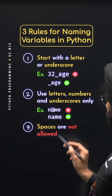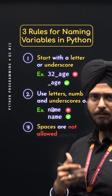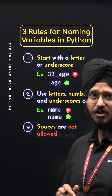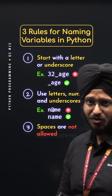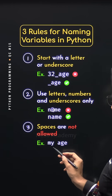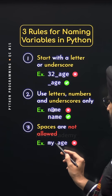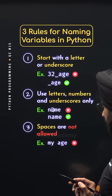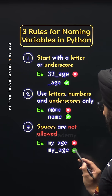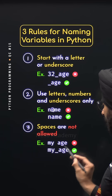Rule number three: spaces are not allowed. If you have multiple words in your variable name, then separate them with underscores, not spaces. For example, this variable name is invalid because we are separating the words by a space. But this variable name is valid because here we are separating the words by an underscore.